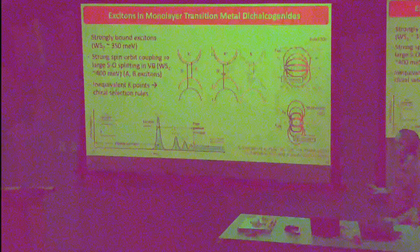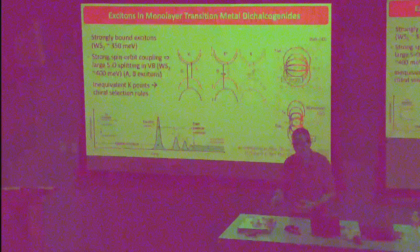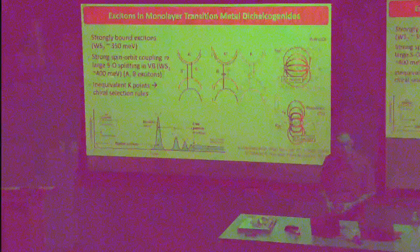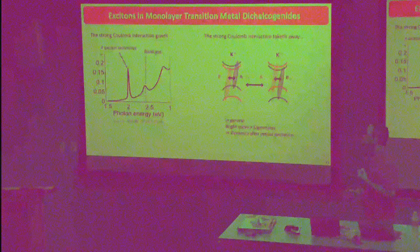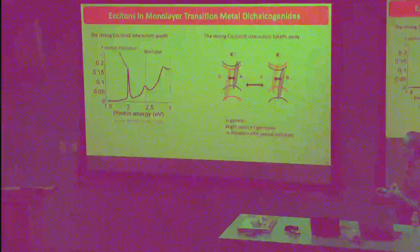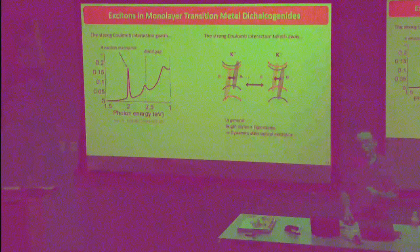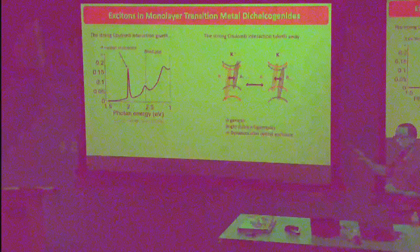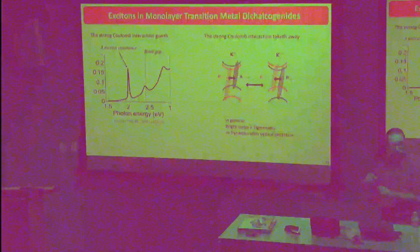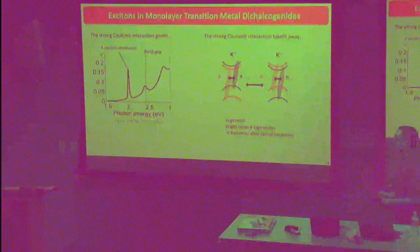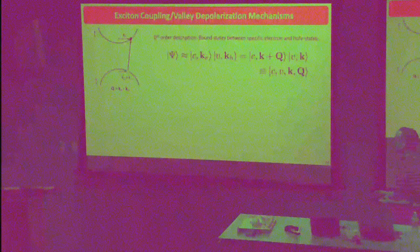You have strongly bound optically addressable states that people talk about using for things like valleytronics. But a key take-home point: the strong Coulomb interaction that gives you excitons bound by 350 meV below the band gap also taketh away. When you try to excite an exciton in one valley — say K-plus — that exciton can be coupled through its interaction with states in other parts of the Brillouin zone. So things get complicated even as you have these stable, strongly bound states.